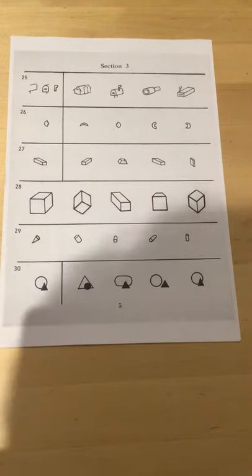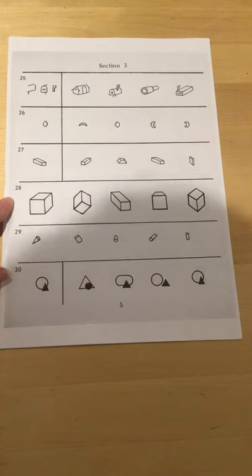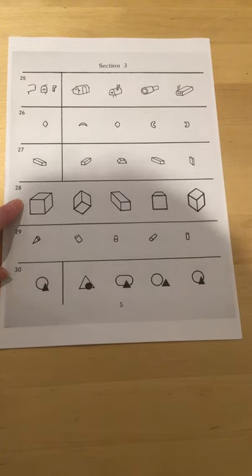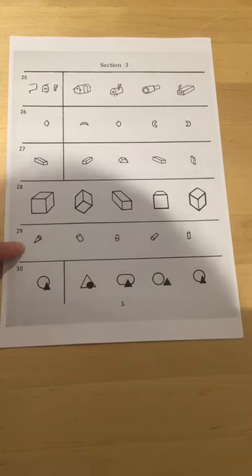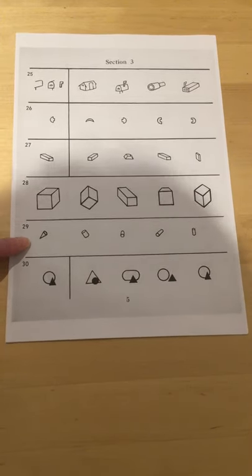In 28 you're looking for the cuboid. All of the others are different perspectives of drawing a cube so you're looking for the cuboid here. And in 29 you are looking for the cone. Which shape is the cone?